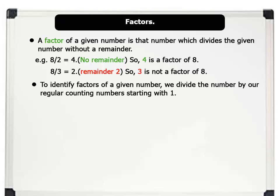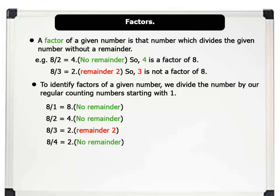Now, let us find the other factors of the number 8. 1 divides 8 equals 8 with no remainder. 2 divides 8 equals 4 with no remainder. 3 divides 8 equals 2 remainder 2. 4 divides 8 equals 2 with no remainder.